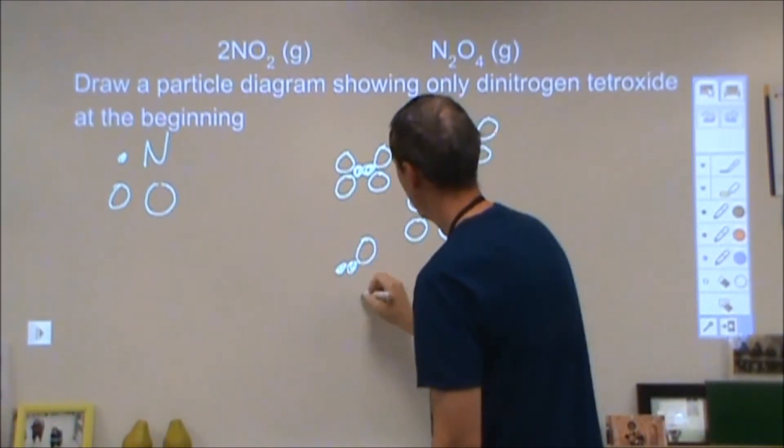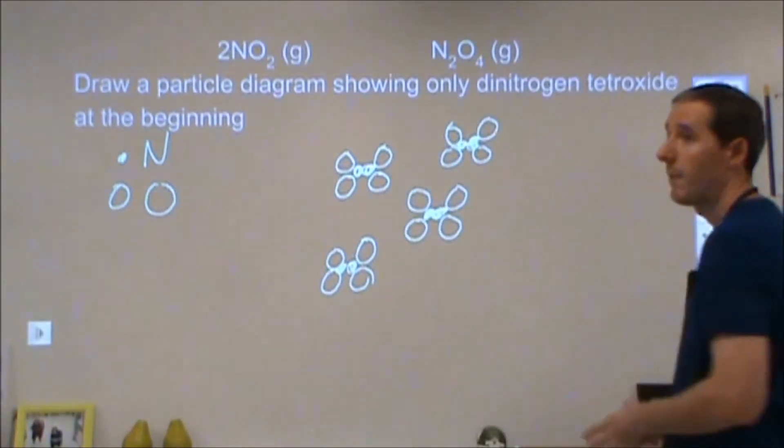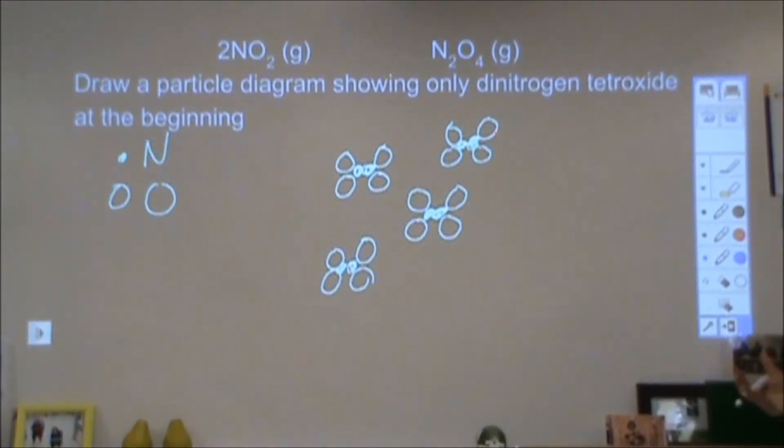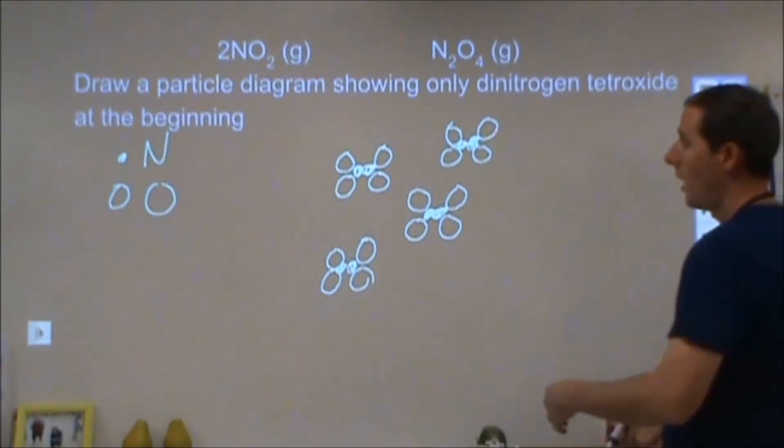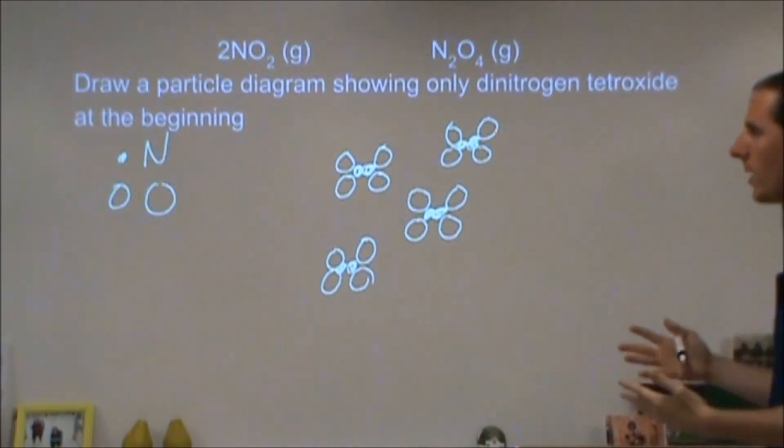Instead of NO2, I have N2O4, that's twice as much stuff, so I need half as many molecules to have all the nitrogen and oxygen atoms present. Here's an NO2, here's an NO2, it's dimerized, so I need half as many as before.